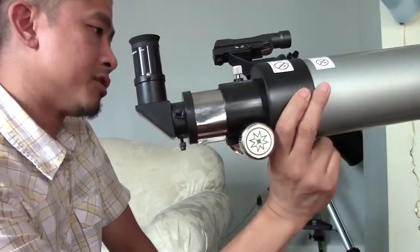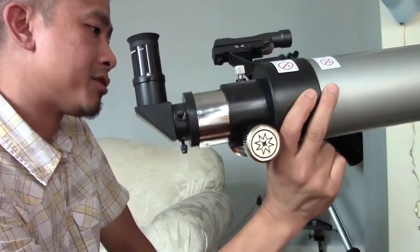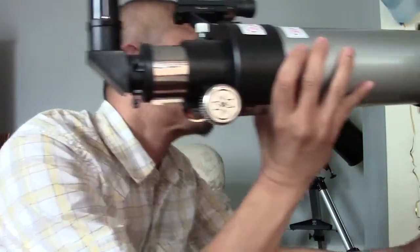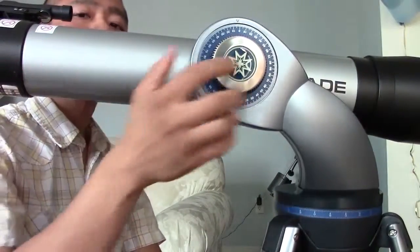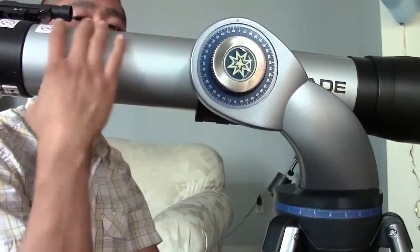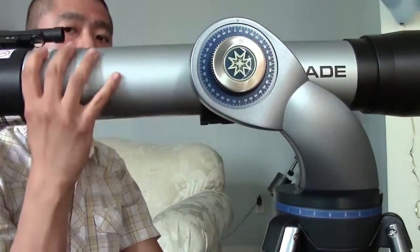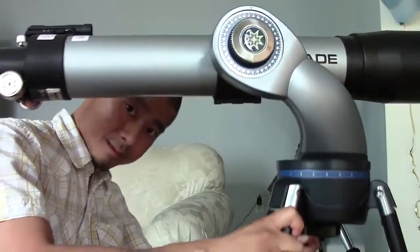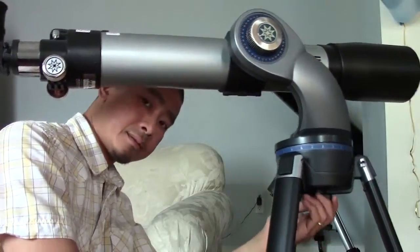Now when you're slewing it around, make sure that these adjustment screws are loose. This would be your adjustment for your altitude. And down here is your azimuth.